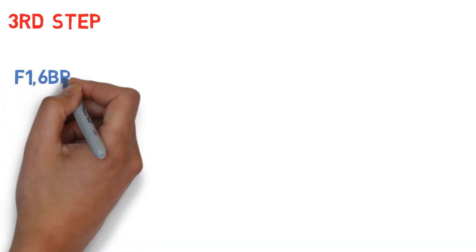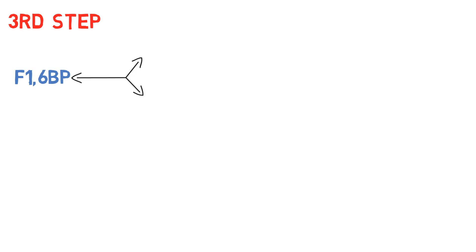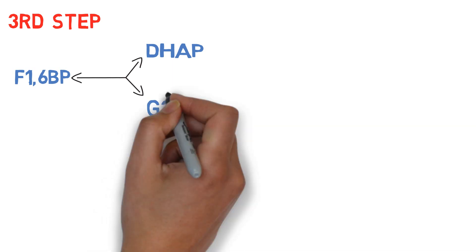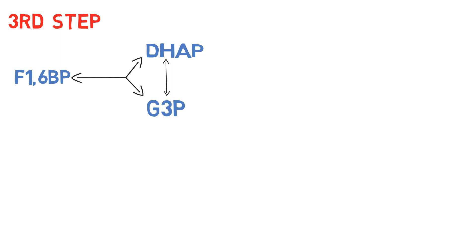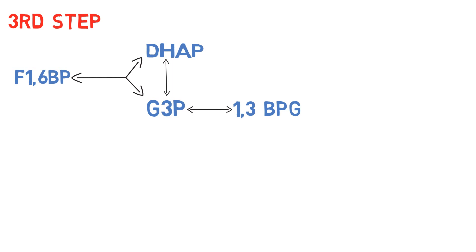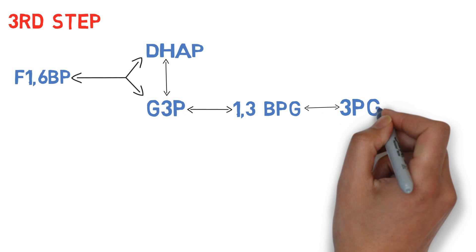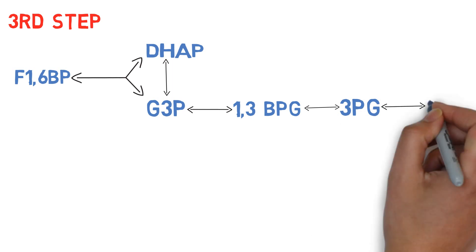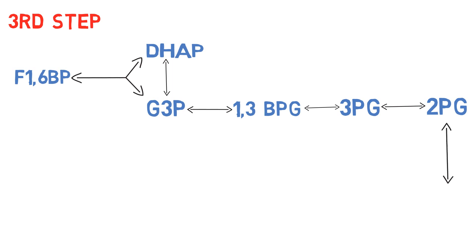Before the last step, fructose-1,6-bisphosphate produced earlier undergoes a series of reversible reactions. Fructose-1,6-bisphosphate converts reversibly into both dihydroxyacetone phosphate (DHAP) and glyceraldehyde-3-phosphate (G3P). DHAP can also convert reversibly into G3P. G3P reversibly converts to 1,3-bisphosphoglycerate (1,3-BPG), then to 3-phosphoglycerate (3-PG), then to 2-phosphoglycerate (2-PG), and finally into phosphoenolpyruvate (PEP). All of these reactions are reversible.